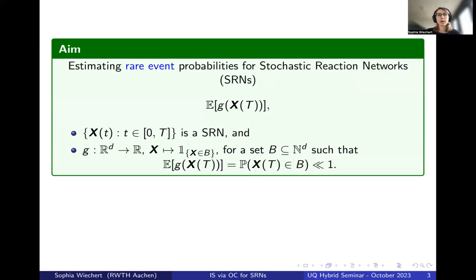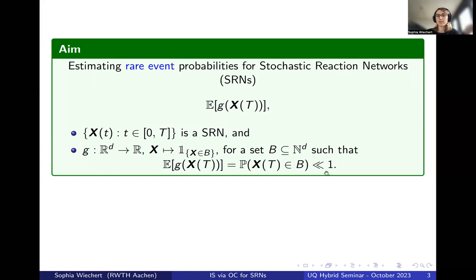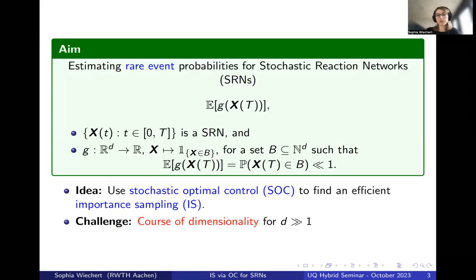The central aim of my work and of this talk is estimating event probabilities in the setting of stochastic reaction networks. We are interested in estimating the expected value of some observable of a stochastic reaction network at final time T, where the observable is an indicator function such that the final state is within some set B. One of the main challenges is the curse of dimensionality, which occurs if we have higher-dimensional stochastic reaction networks where D is larger than one.